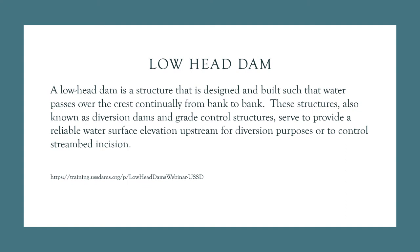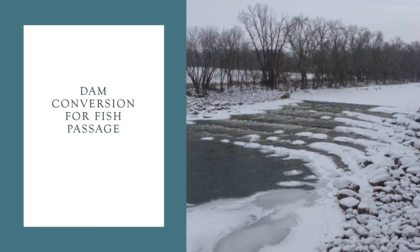In many cases, these dams are used to either divert the water or to control the grade, which can reduce in-channel erosion. However, these low head dams do cause challenges for fish passage. In the Red River, many of these low head dams are being converted to rock riffle structures that serve the same function as the low head dam, but are constructed in a way to enhance the ability of fish to navigate through the structure.